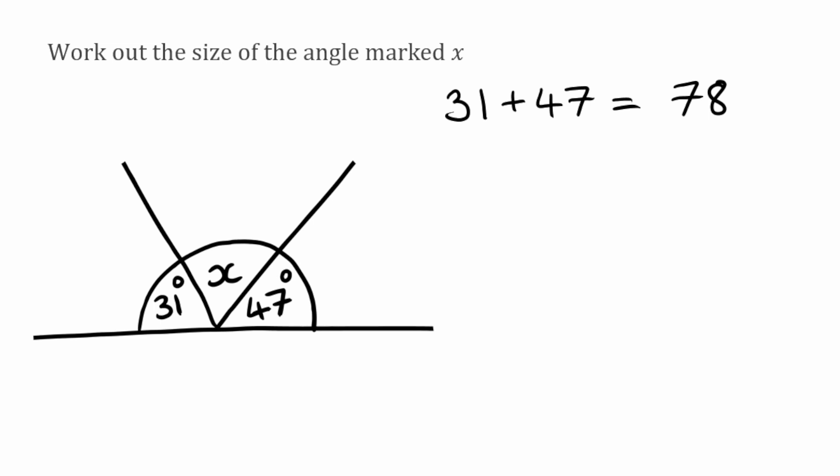So we know that some of the angles that we've been given add up to 78 and all we have left is that angle X. So because they should all add up to 180 we're simply going to do 180 take away the 78 and that's going to leave us with 102. So the size of the angle X for this one would be 102 degrees.